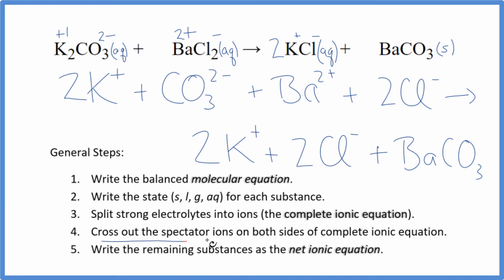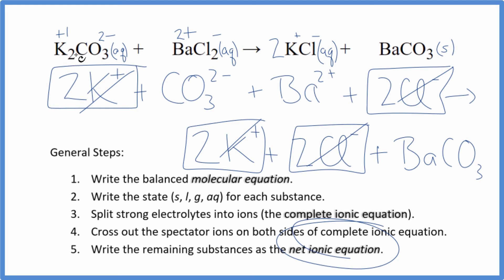Now we can cross out these spectator ions. They're on both sides, so they don't change, and we're not really interested in them. In the reactants, I have two potassium ions and here in the products. Those are gone. Here's two chloride ions and again in the products. But what's left, that's the net ionic equation for K2CO3 plus BaCl2.